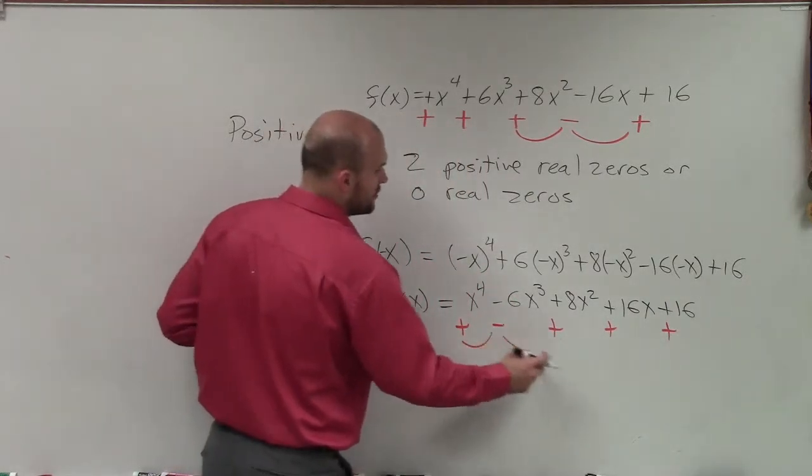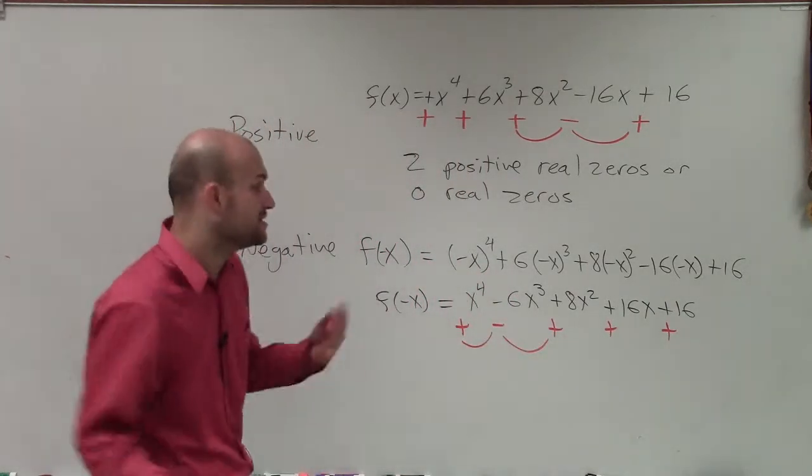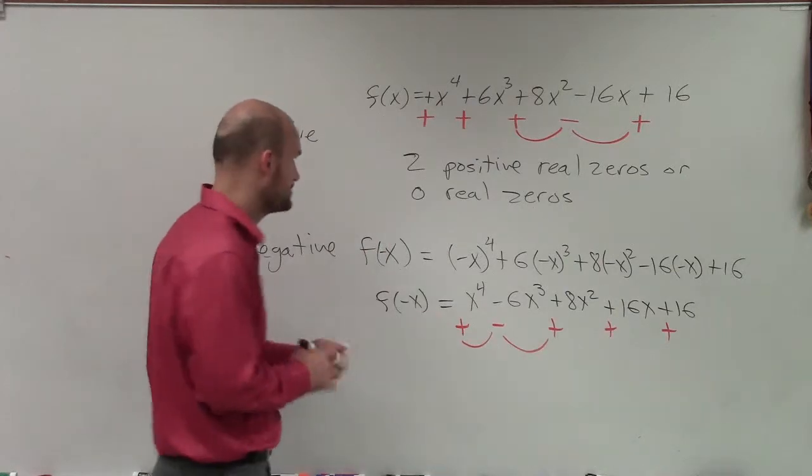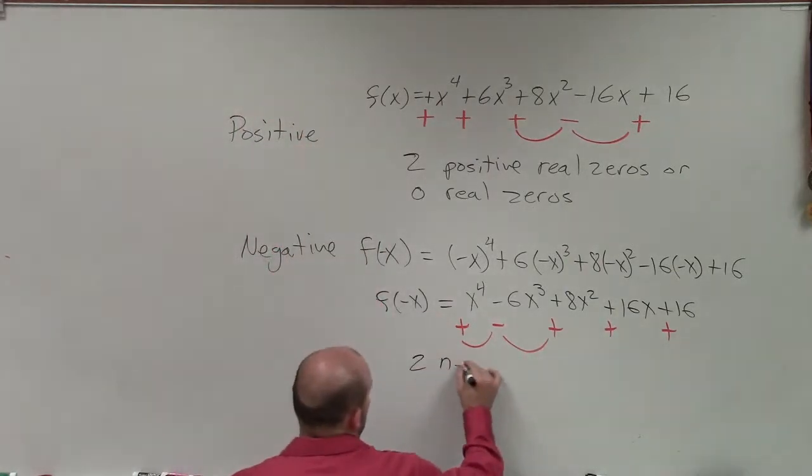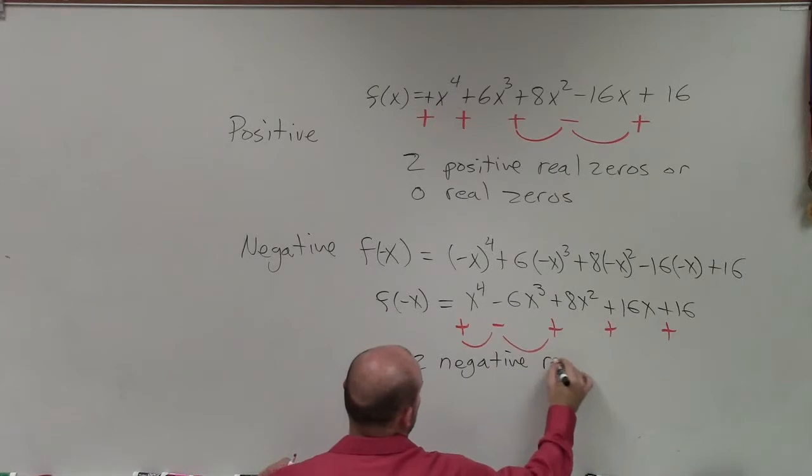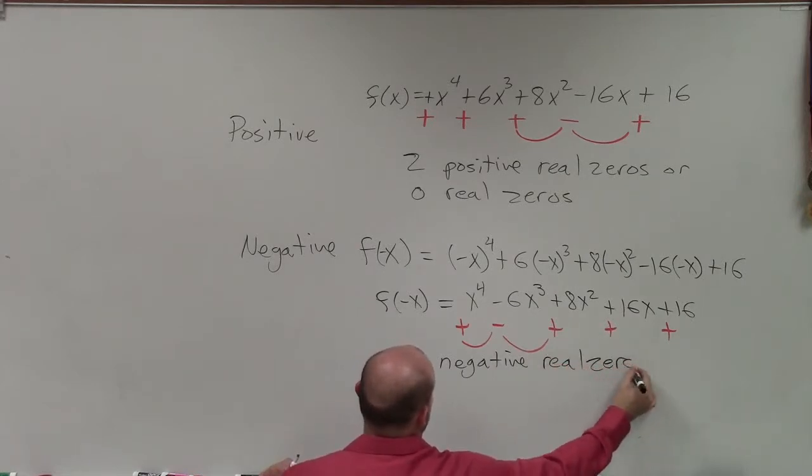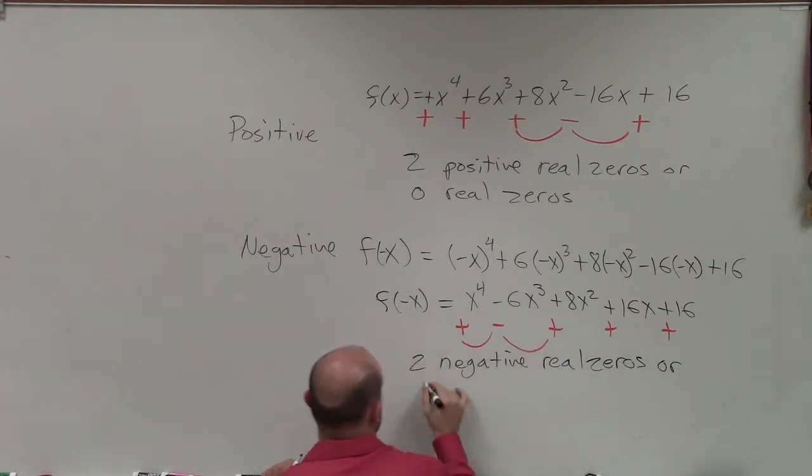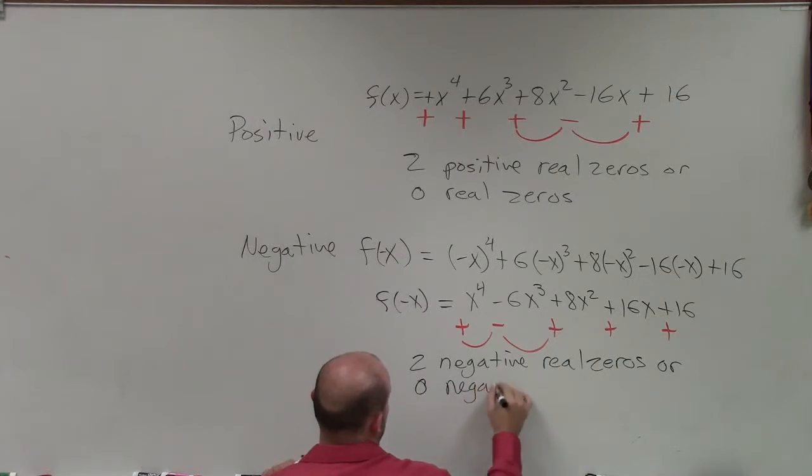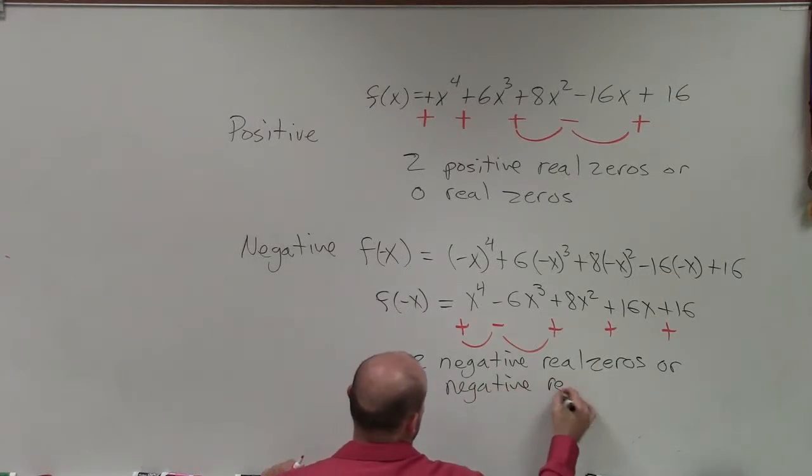So there's two alternating signs. The number of negative real zeros is going to be two negative real zeros or zero negative real zeros.